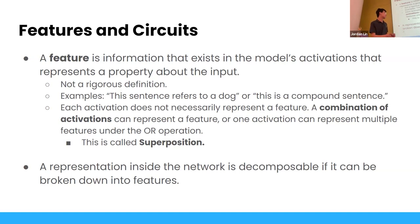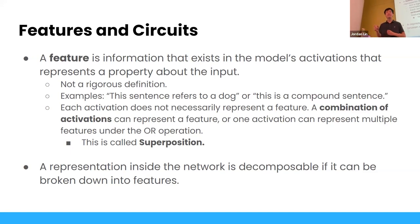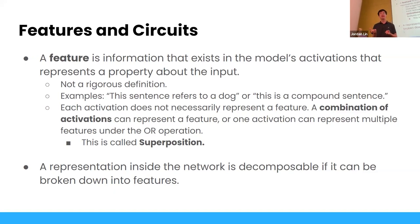Representation inside a neural network is decomposable if it can be broken down into features. An activation is decomposable if we can project it from its original basis space into a different basis space where every direction is a feature. The activations might be in Rⁿ; the idea is you can project Rⁿ to Rᵐ where m is a higher-dimensional space and every orthogonal direction is a feature. If you have some vector in Rⁿ and project it to Rᵐ, it will lie along the axes, representing whether each feature is present or not.